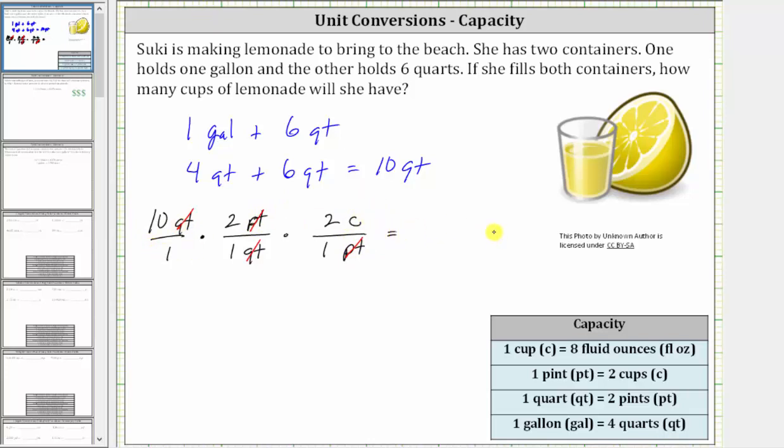So multiplying, notice how the denominators are all one and therefore the product is 10 times two times two, which is 40. We now know that 10 quarts is equal to 40 cups. And therefore, Suki has 40 cups of lemonade.